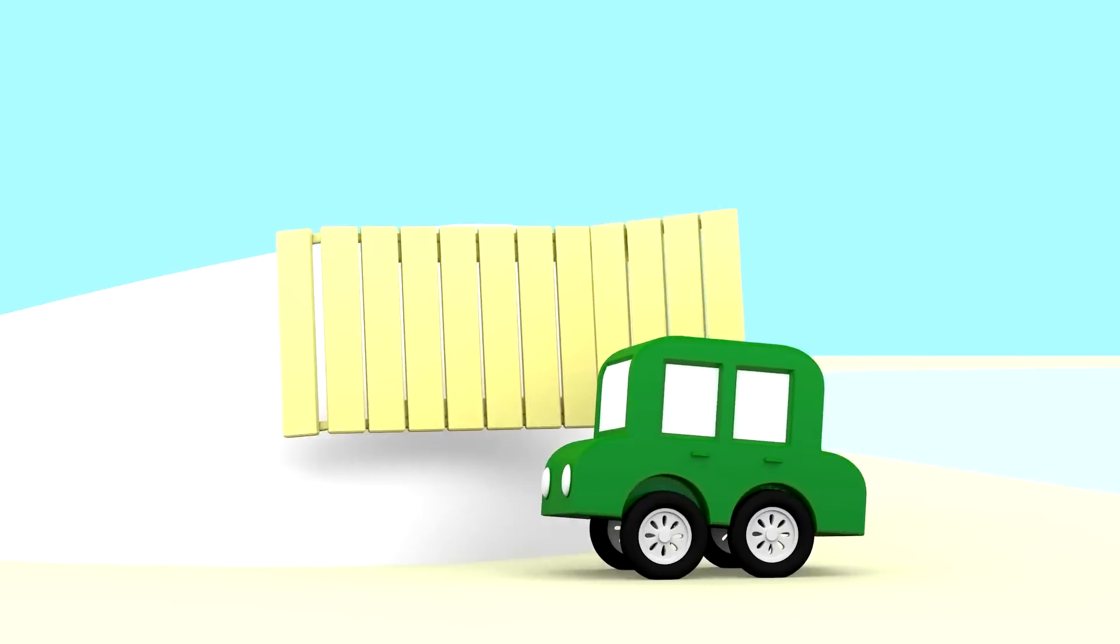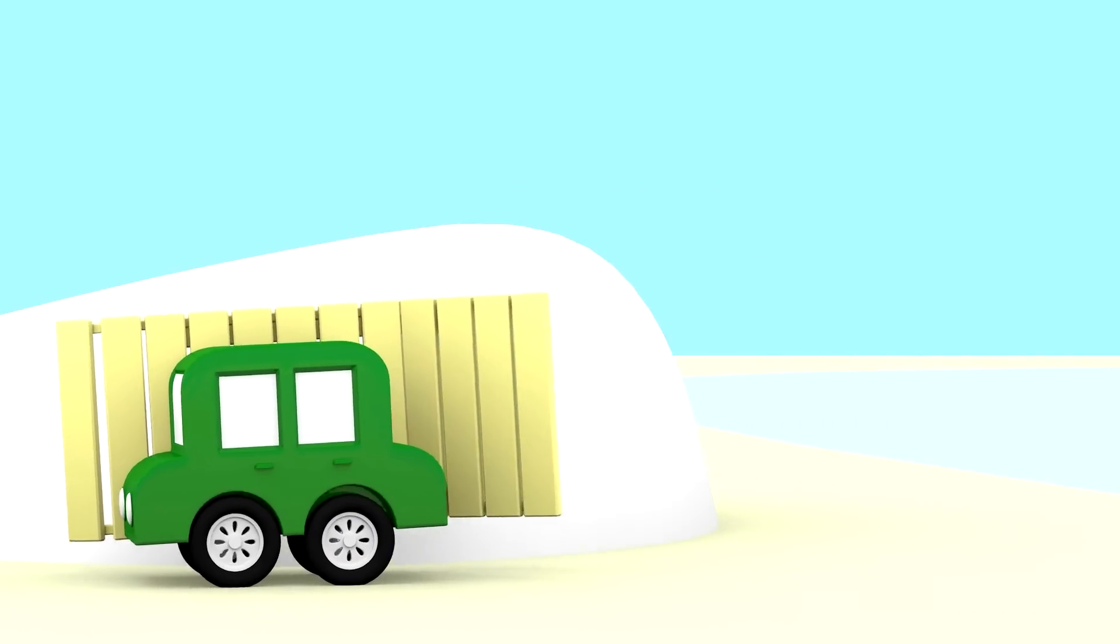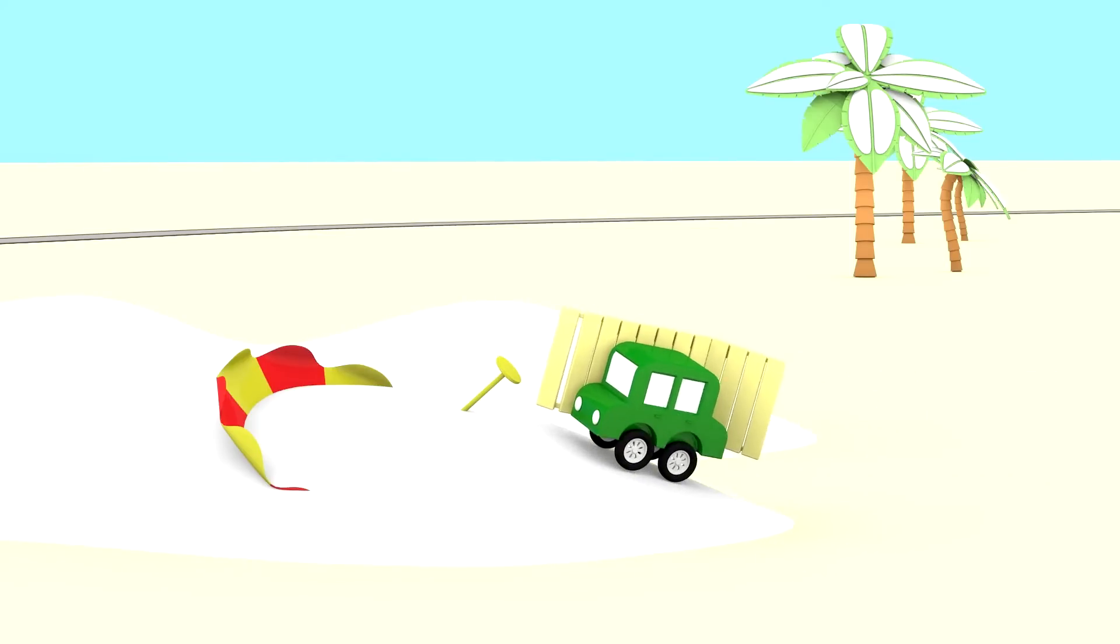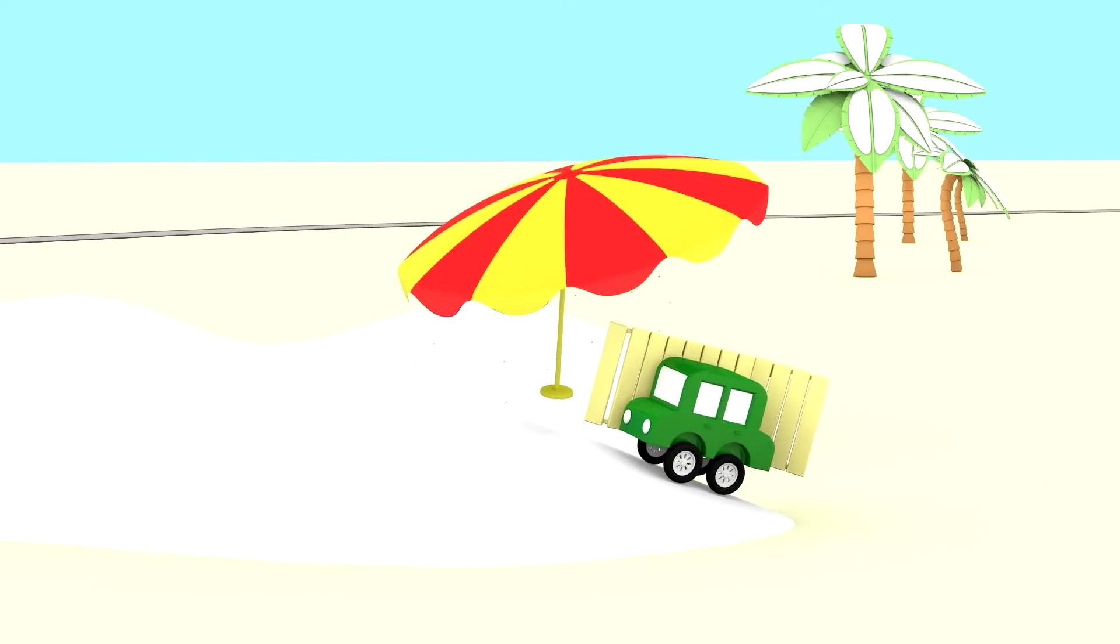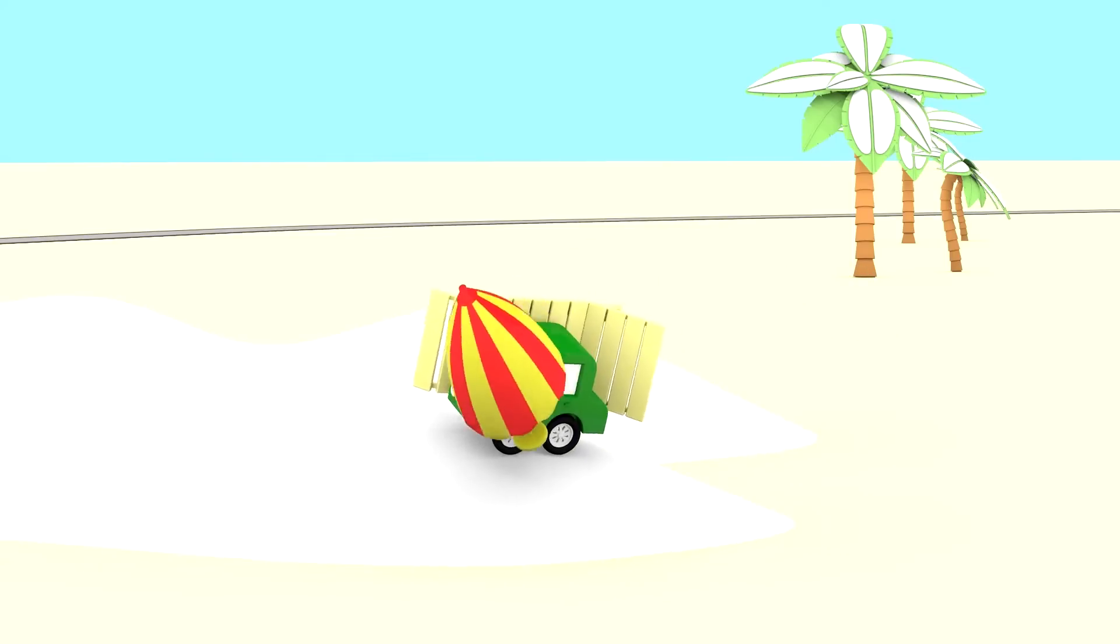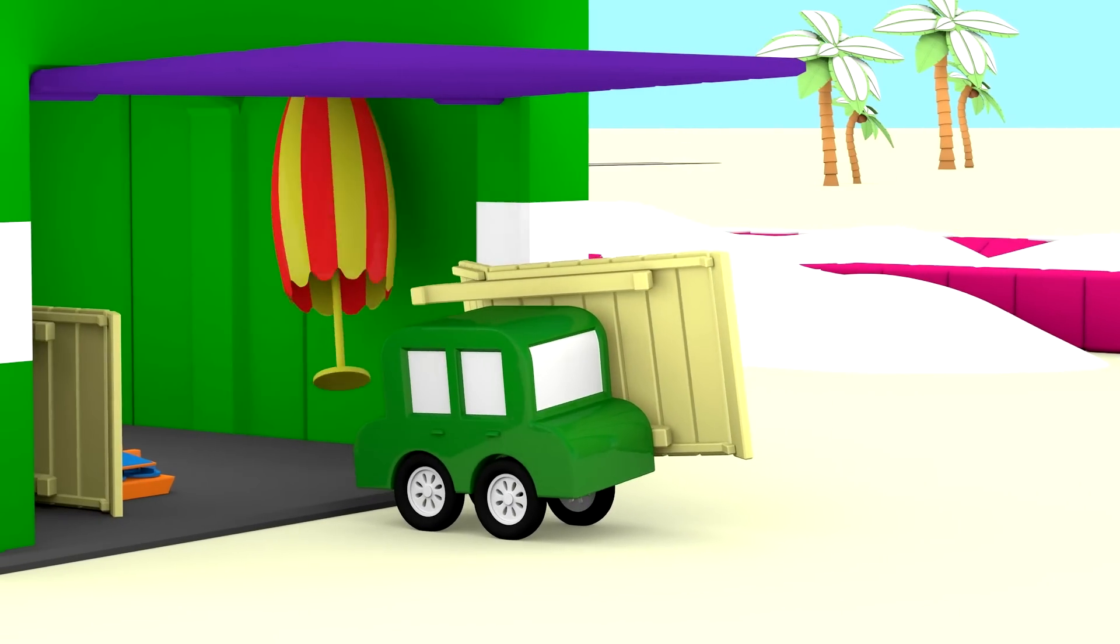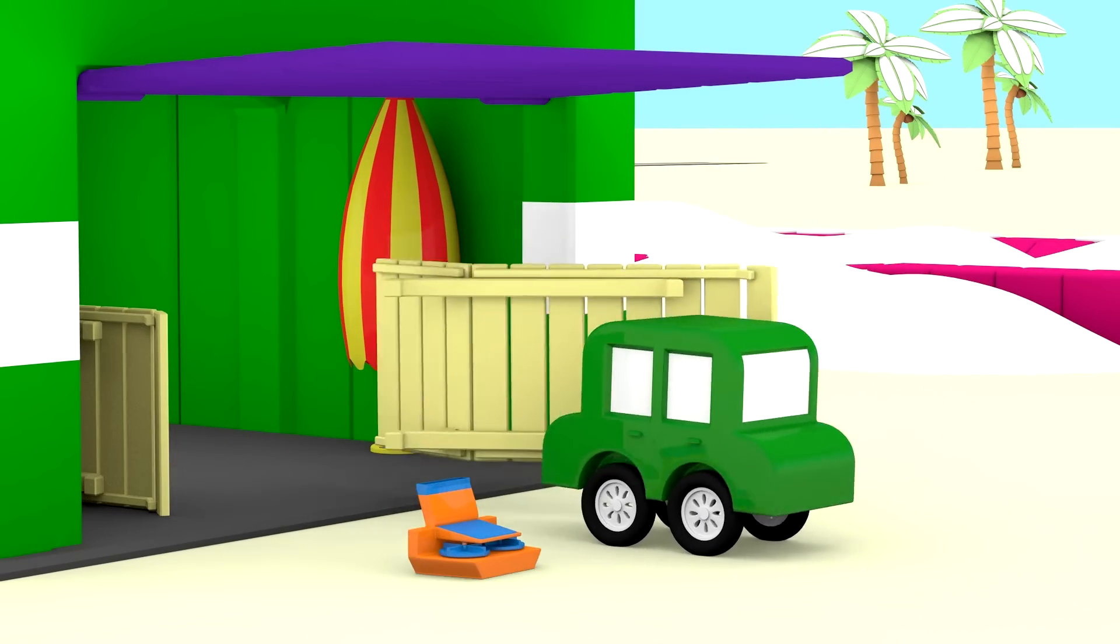The green car has found a deck chair in the snow. And there is a sun umbrella here, too. All of this needs to be taken off the street. Otherwise, both the deck chair and the sun umbrella will be ruined before the summer.